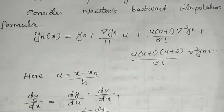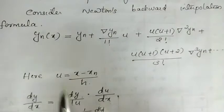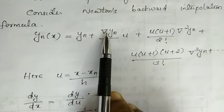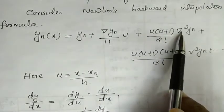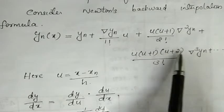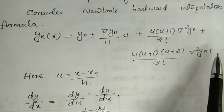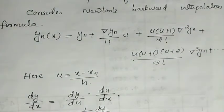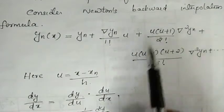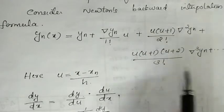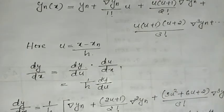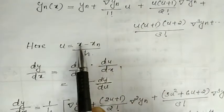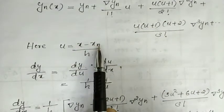First consider Newton's backward interpolation formula: y of x equals yn plus del yn times u, plus u(u+1) by 2 factorial times del square yn, plus u(u+1)(u+2) by 3 factorial times del cube yn, plus etc. Here u equals x minus xn divided by h, where xn is the last value of x.